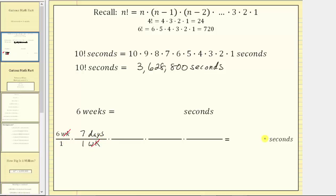Because our goal is to have seconds, not days, we will now convert days to hours. Because one day equals 24 hours and we want the units of days to simplify out, the next unit fraction will have one day in the denominator and 24 hours in the numerator. The units of days simplify out and we're left with hours.